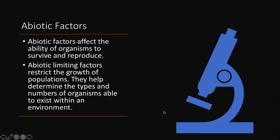Abiotic factors affect the ability of organisms to survive and reproduce. They're called limiting factors because they restrict the growth of populations — they limit them. They help determine the types and numbers of organisms that are able to exist within an environment.